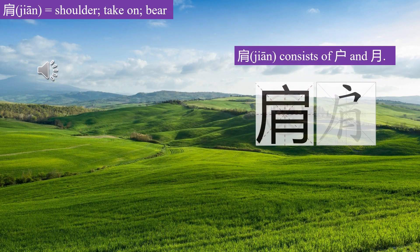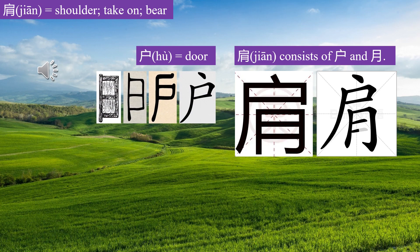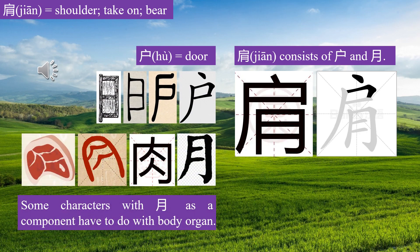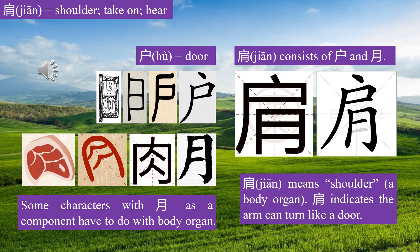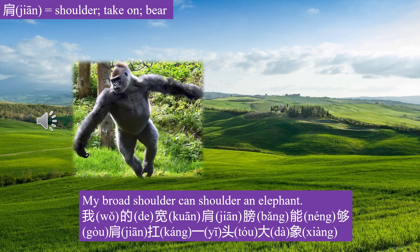Let's learn character Jiān. Jiān consists of Hù and Yuè. Hù, door. Some characters with Yuè as a component have to do with body organs. Jiān means shoulder, a body organ. Jiān indicates the arm can turn like a door. My broad shoulders can shoulder an elephant. 我的宽肩膀能够肩扛一头大象。 Have a try. Bye.